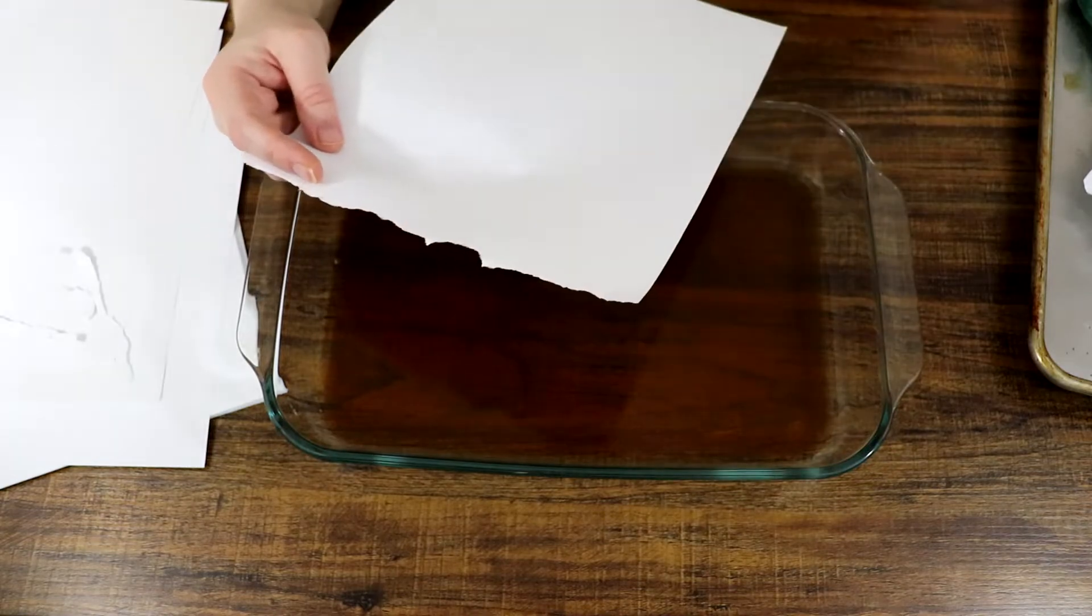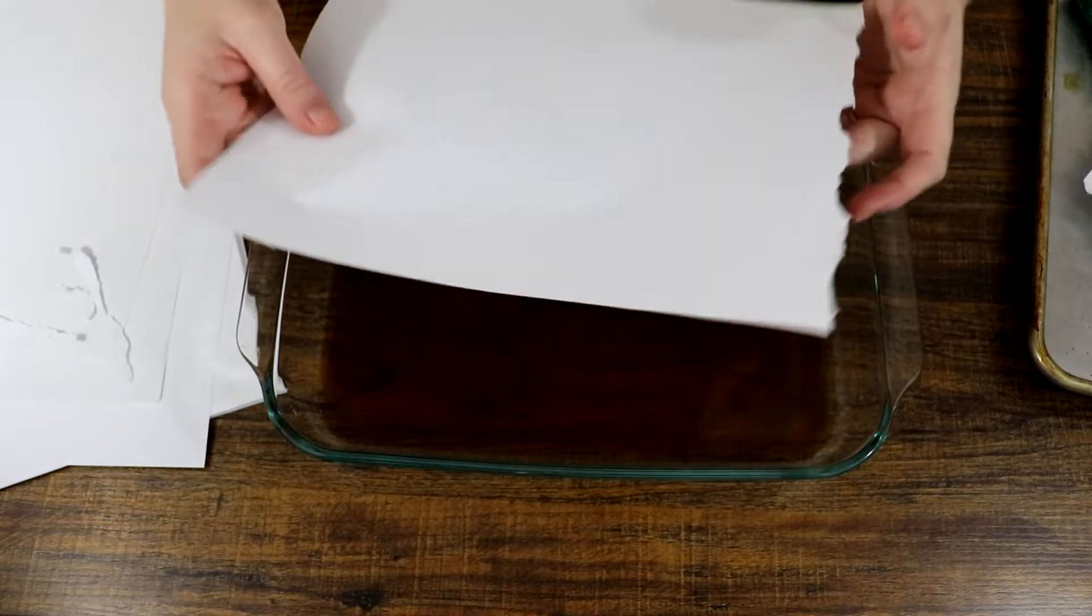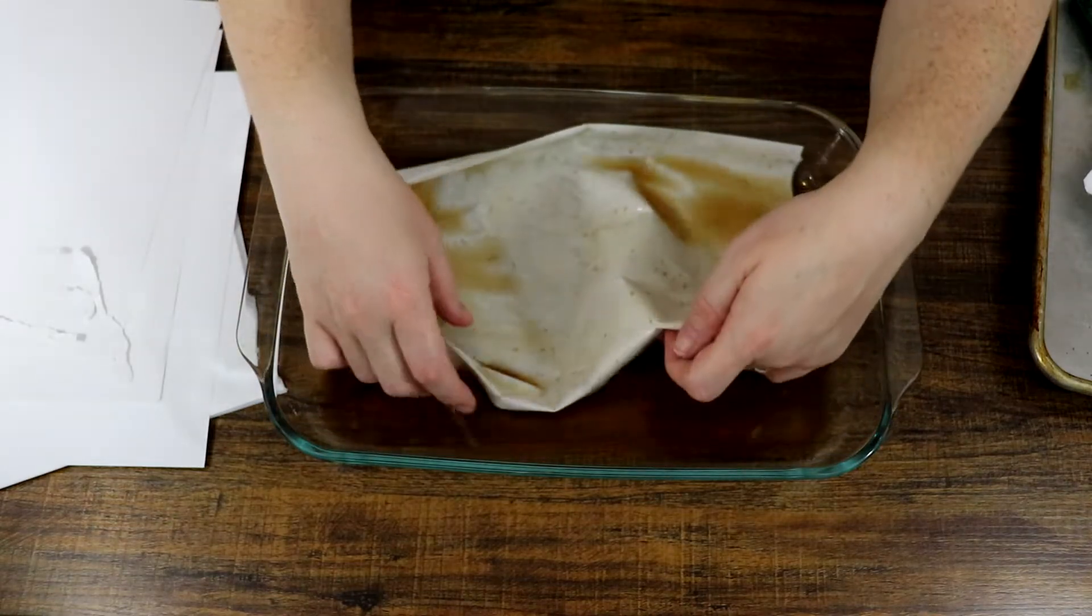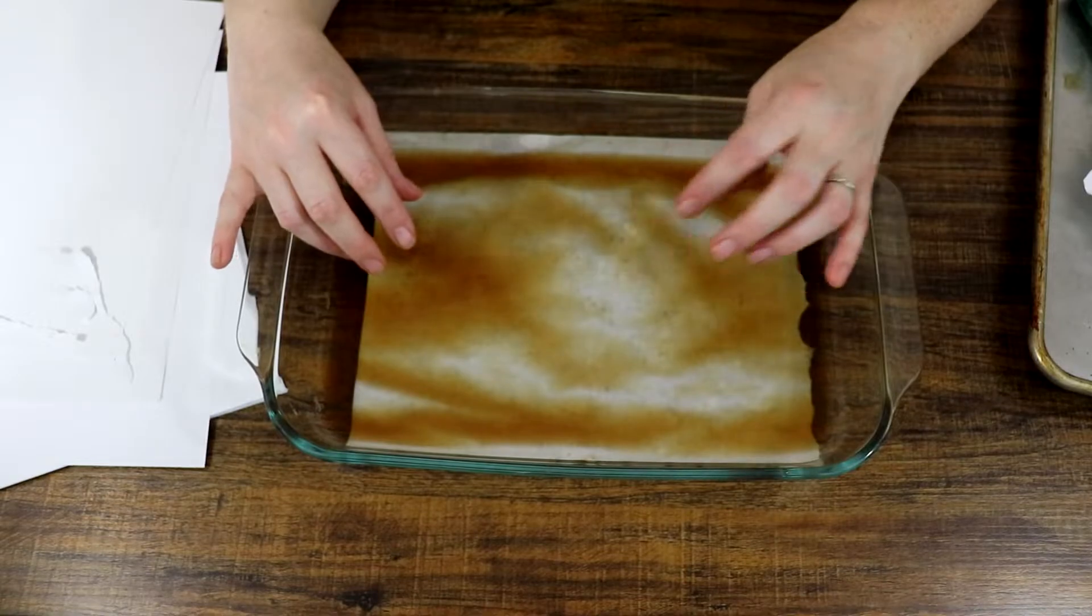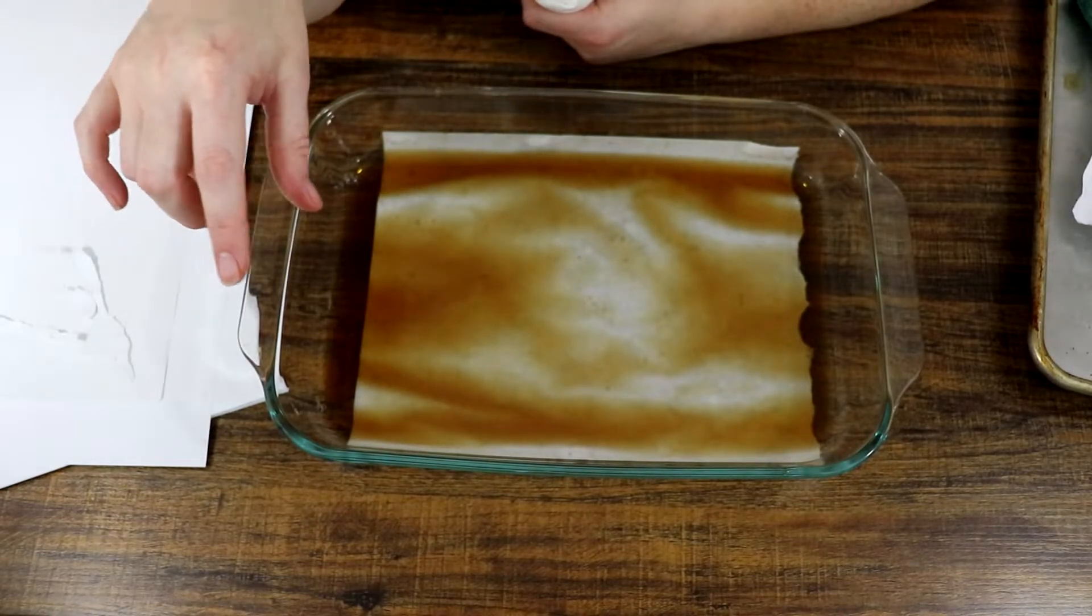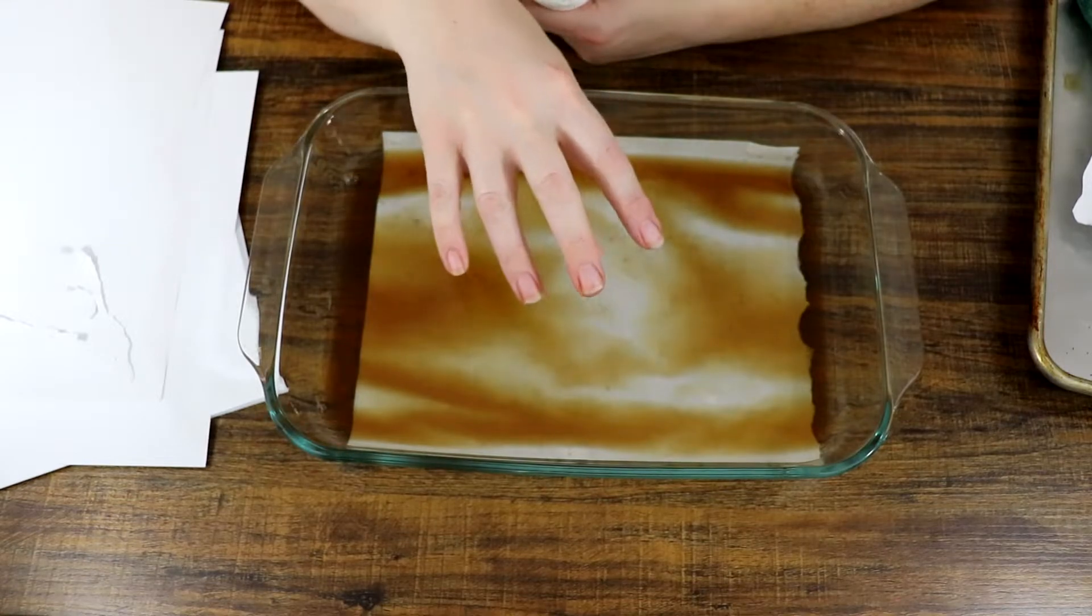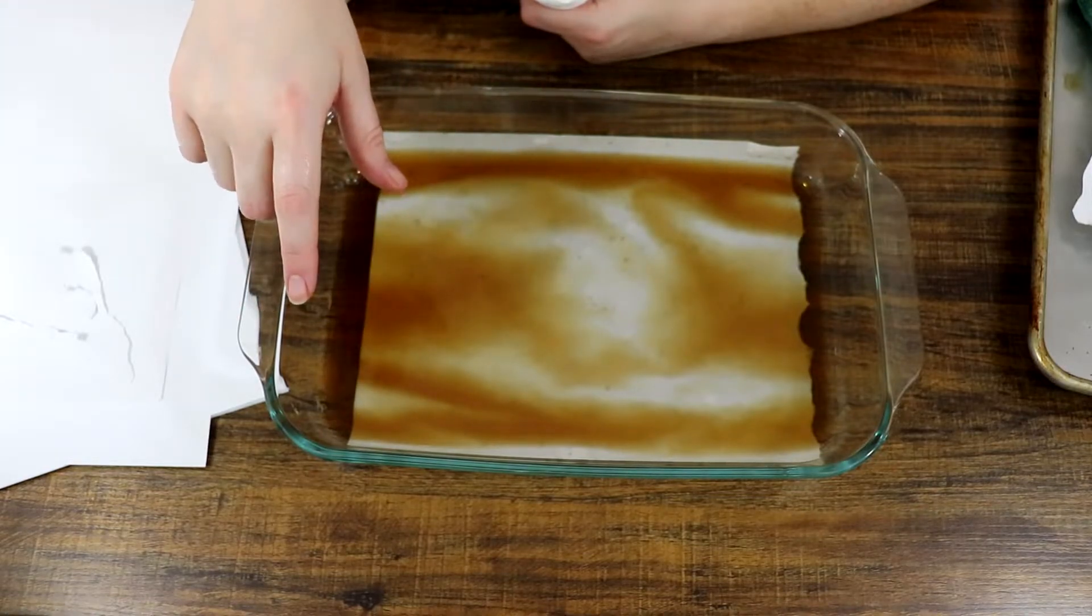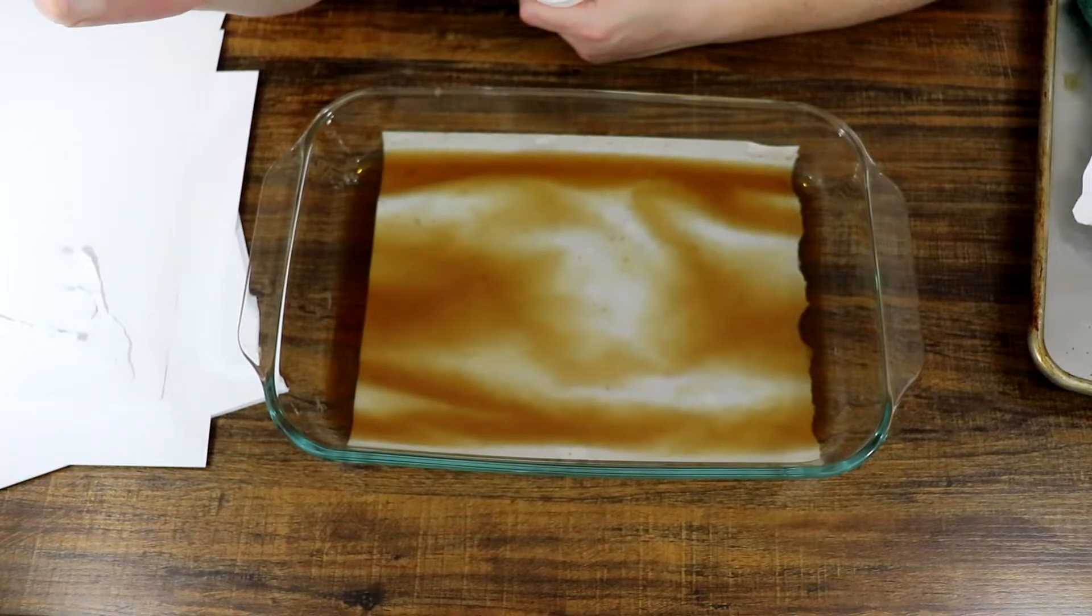So once you have your paper either crumpled or trimmed to your satisfaction, all you need to do is you're going to dunk it in the tea. I like to flip it over and then just make sure you kind of have it as submerged as you can. There's another trick that you could do. If you have instant coffee grounds, sprinkle some in the water or sprinkle some in the tea and it will leave darker marks on your paper. That's also nice. If you do that, I might change the tea in between because I'm not 100% sure how it will affect other paper that you dip into it, but you can give it a try.